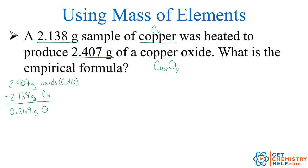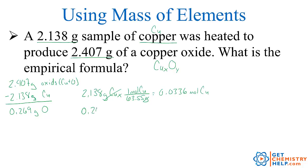I need to turn mass of copper into moles of copper and mass of oxygen into moles of oxygen using the molar mass. So 2.138 grams of copper divided by its molar mass of 63.55 gives 0.0336 moles of copper. And 0.269 grams of oxygen divided by its molar mass of 16.00 grams per mole gives 0.0168 moles of oxygen.